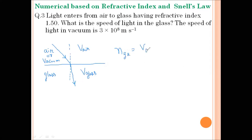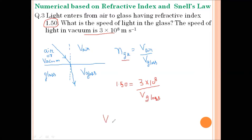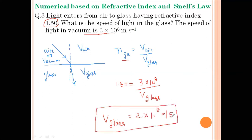From the relation of refractive index, we can write: the refractive index of medium glass with respect to medium air equals the speed of light in medium air divided by the speed of light in medium glass. The refractive index is given as 1.50. Substituting, velocity of light in air is 3 × 10⁸ m/s. On solving, the speed of light in medium glass comes out to be 2 × 10⁸ m/s, confirming that when light enters from air to glass its speed decreases, since glass is denser than air.